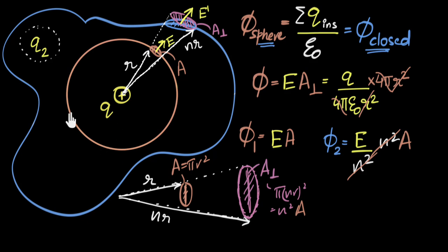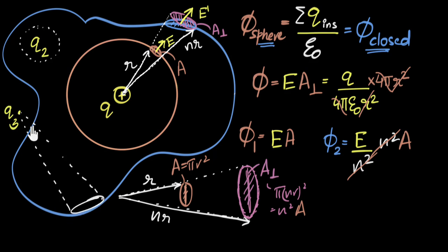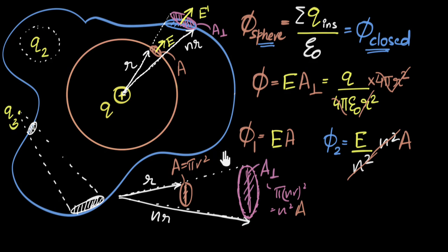Finally, Gauss's Law says charges outside do not contribute to the flux. If there's a charge Q3 outside, can we prove the flux due to it is zero? Yes — using the same technique. We divide the closed surface into tiny pieces. For each pair of pieces intersected by lines from Q3, we can prove that the flux entering one piece is exactly equal to the flux exiting the other. Doing this for the entire surface shows that the total flux contribution from an outside charge is zero. So even if there are 100 charges outside, their contribution to the flux is zero. We have completely proved Gauss's Law: the flux through a closed surface equals the total charge inside divided by epsilon naught.